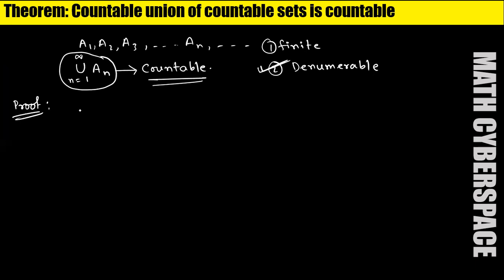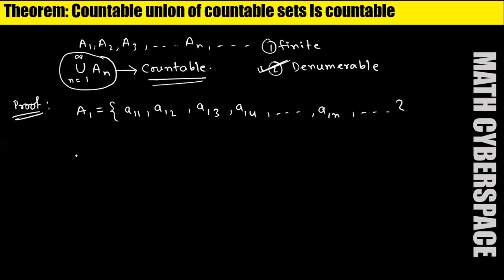So if denumerable, then the elements will be in this form. A1 equals {a11, a12, a13, a14, a1n, ...}. Similarly, for A2, the elements will be {a21, a22, a23, a24, a2n, ...}.